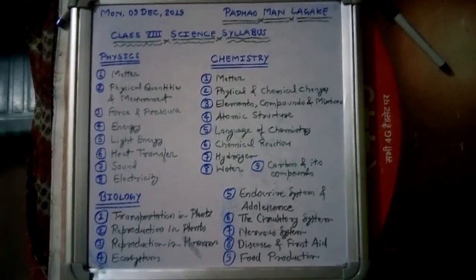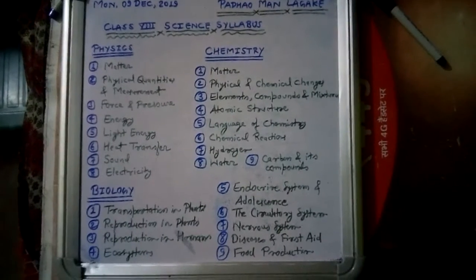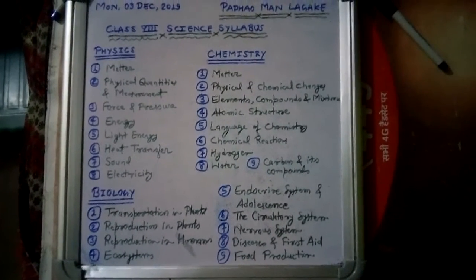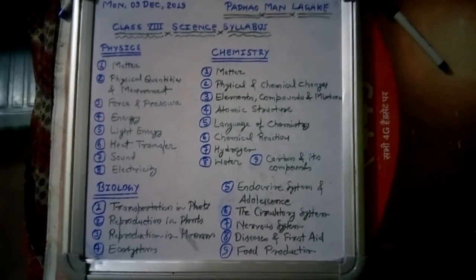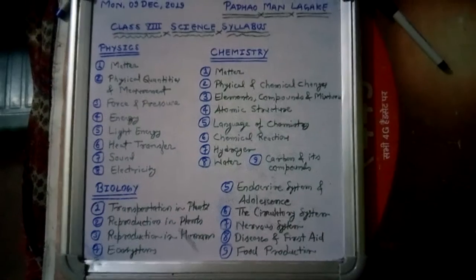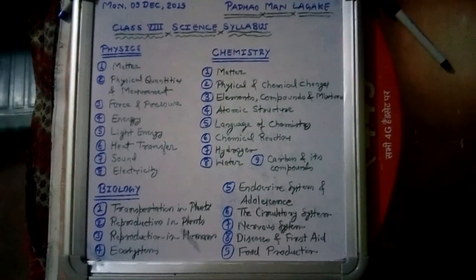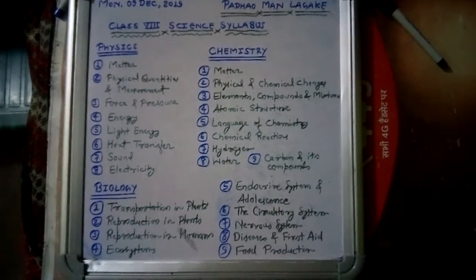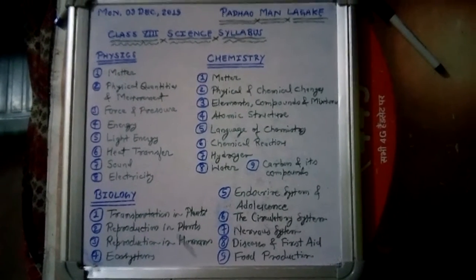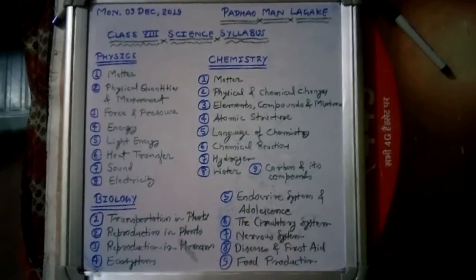Chapter 1 in both physics and chemistry is Matter — this chapter is common to both subjects. So don't worry; basically we will study matter in a combined manner.